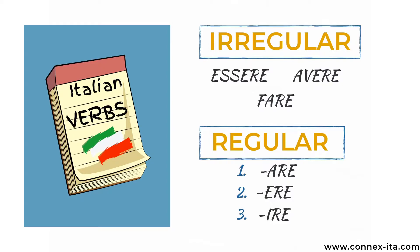Regular verbs can fall into three different groups based on the way they end. The first category is for verbs ending in -ARE, the second for the ones ending in -ERE, and the third when the verb ends in -IRE. Today I'm only going to show you the verbs that belong to the first class, so they all end in -ARE.